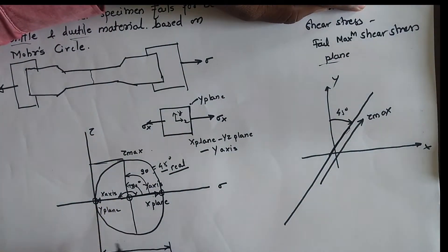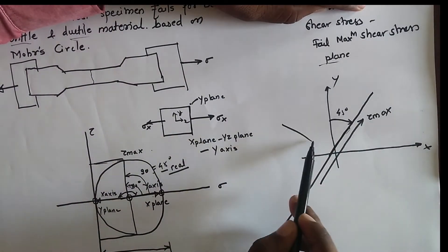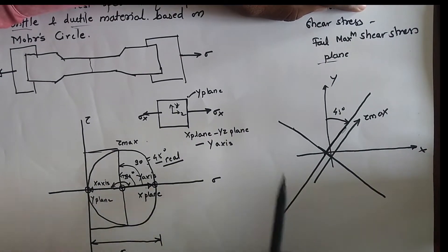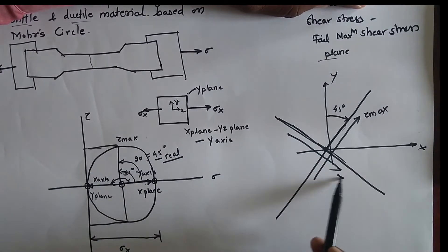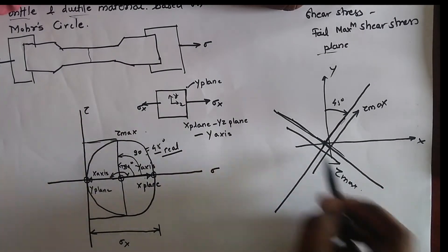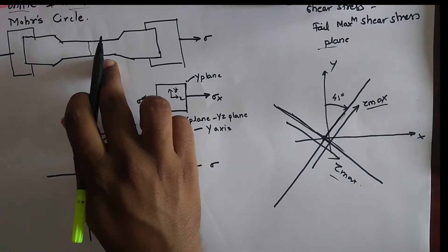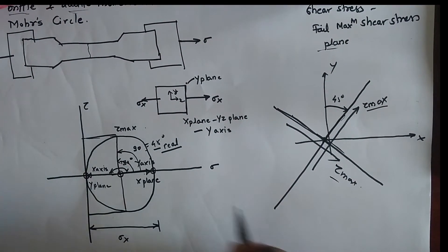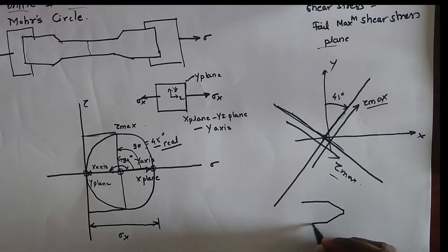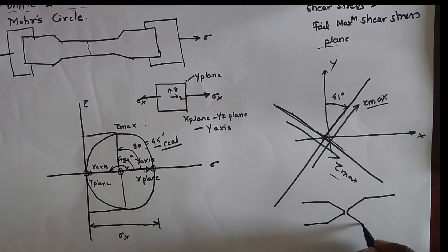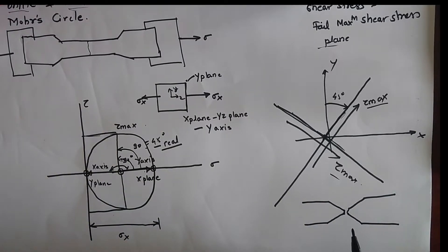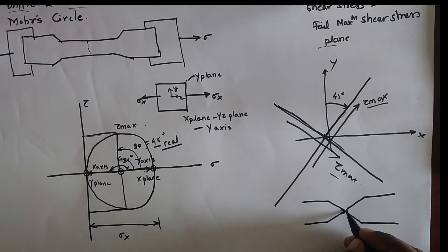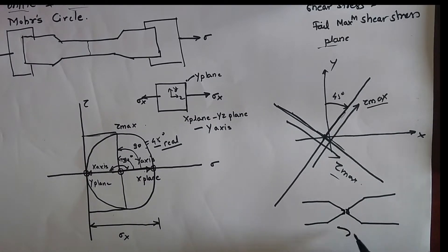Similarly, there will be another tau max plane which is 180 degrees away on the Mohr's circle — in reality that is 90 degrees. So we draw another shear stress plane at 90 degrees to the first. These are the two planes of maximum shear stress acting on the system. That is why the tensile test specimen for ductile material fails in a cup-and-cone shape. At the end of the failure, the ductility of the material vanishes and the material behaves as a brittle material, causing brittle fracture at the tip — giving us the cup-and-cone shape. This is for ductile material.